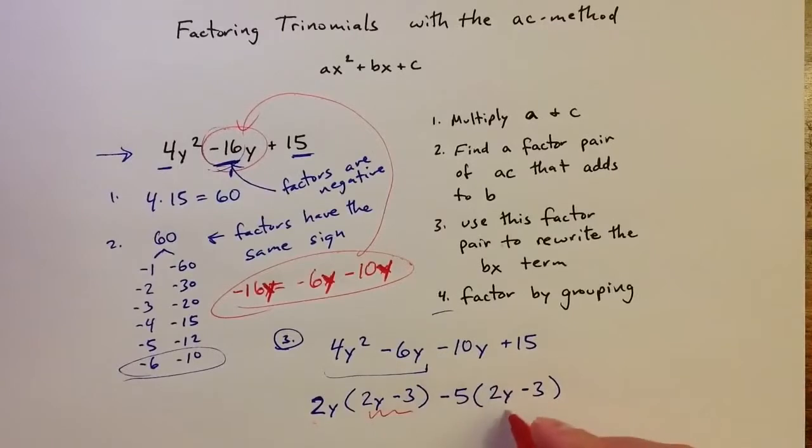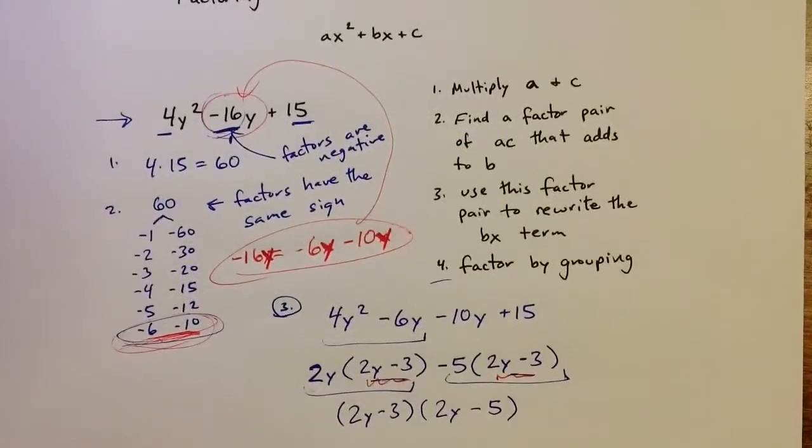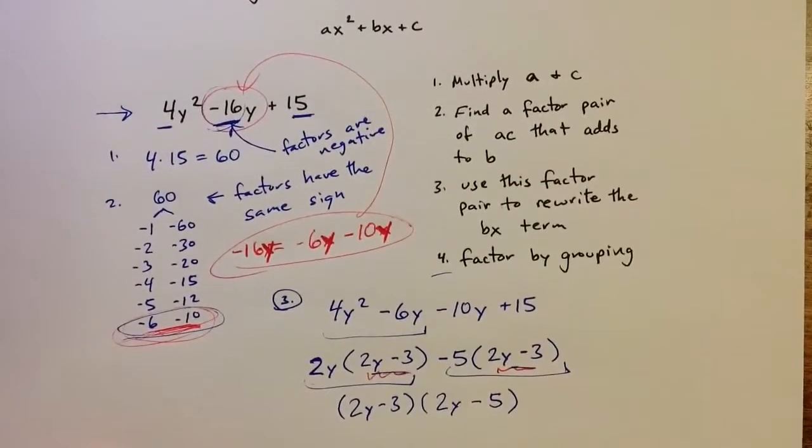So factoring by grouping works because we ended up with this special pair. I have one common factor of 2y minus 3. 2y minus 3 is a common factor of both of those groups. And then what's left behind from the first group is 2y, and what's left behind from the second group is minus 5. So my final factorization is 2y minus 3 times 2y minus 5.